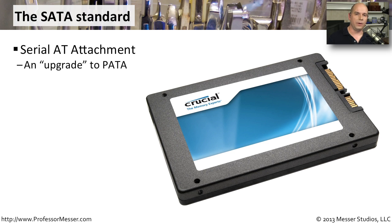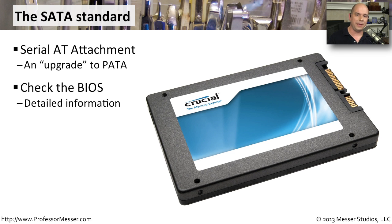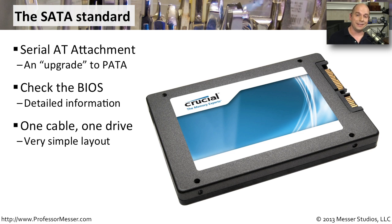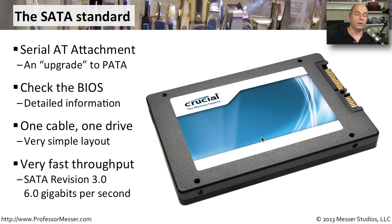We added the term 'parallel' in front of ATA to create the PATA name, because we invented an upgrade to the PATA standard called SATA, or serial AT attachment. You can go into the BIOS of your computer to get clues about the type of drive inside. One nice thing about SATA is it uses a much smaller cable because it's a serial connection. Unlike PATA where you could put two drives on a single cable, with SATA you can only have one drive per cable — a one-to-one ratio. SATA is a much faster interface; SATA Revision 3.0 can transfer data at six gigabits per second, enabling very high throughputs, especially with solid state drives.